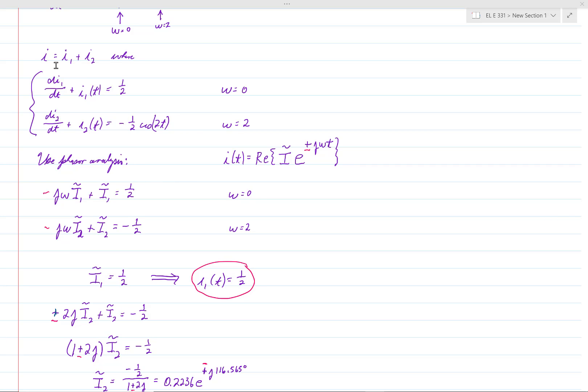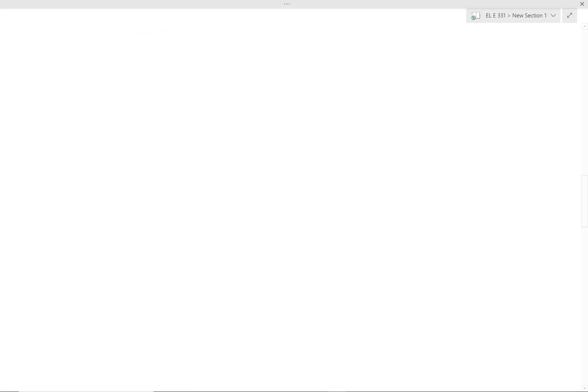For instance, with this problem, the first problem from test 23, if you defined it in that way, then the derivative would give you a minus j omega out front instead of a positive j omega. Now that would make no difference in this first equation because omega is equal to zero. So we would still get i1 tilde equals 1 half, and so i1 of t would be 1 half.